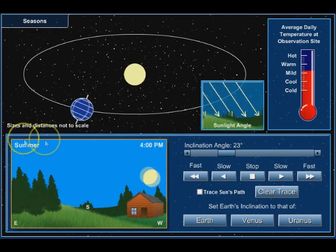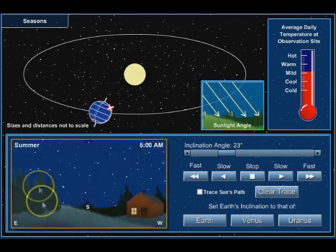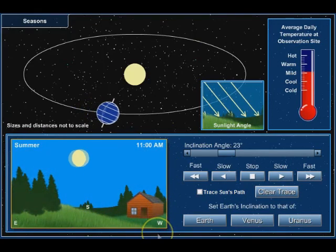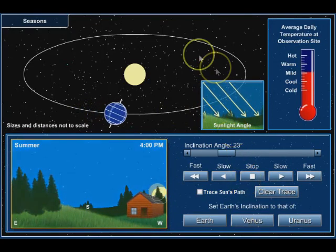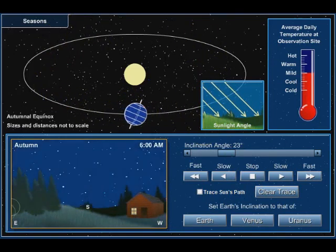So this little bottom box here shows us what it would look like if we were located on the planet at that X. And this top box here shows us what it looks like where we are in the orbit.